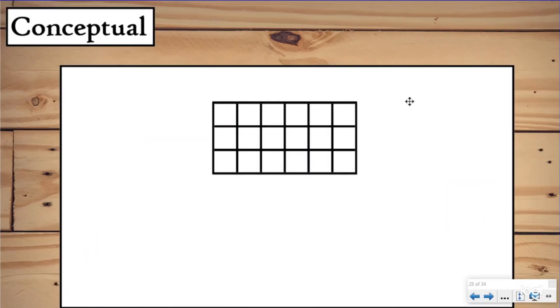So last lesson we talked about finding the area of something like this using our formula. So in our very first lesson we talked about finding the area of this rectangle by just counting the unit squares that cover it, right? Last lesson we started talking about finding the dimensions and using our area formula of length times width to help us figure that out.